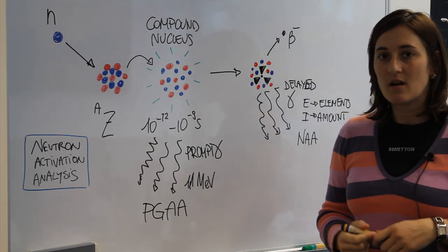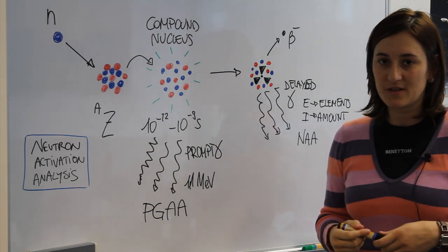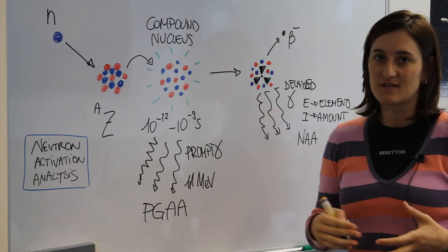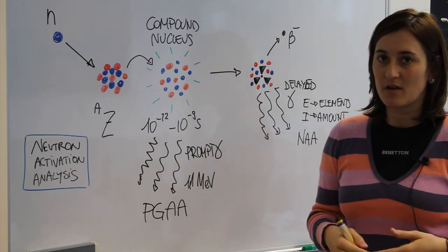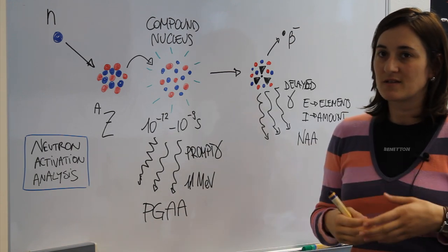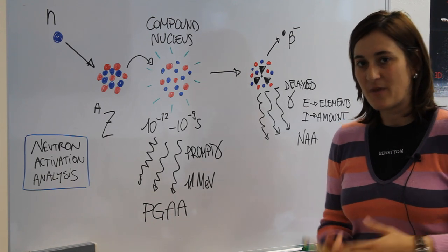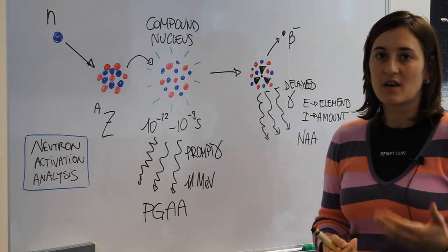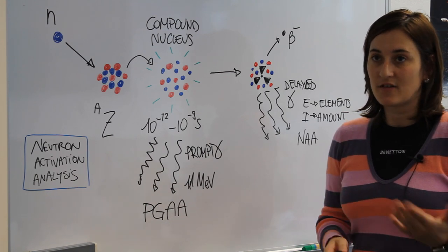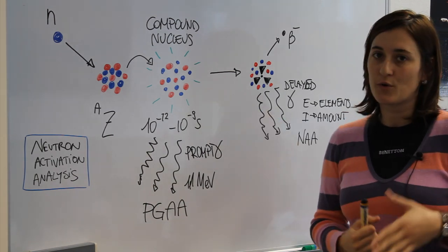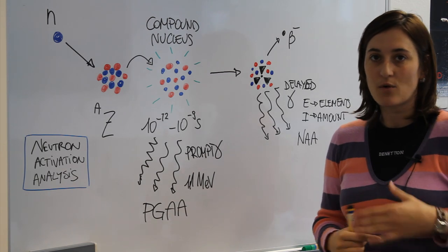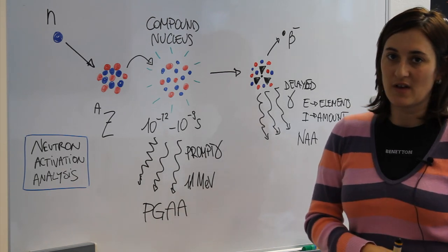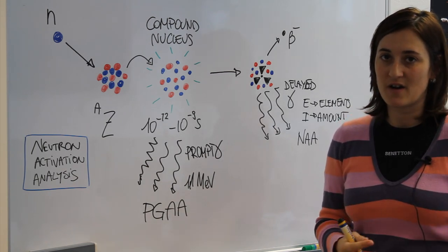With this method, the measurements are a little bit different because the gamma radiation is detected during the neutron irradiation, so this brings a lower sensitivity respect to NAA. But the advantage of this method is that you can detect the elements that are going after the compound nucleus goes to a stable nucleus or for those radioactive elements that don't emit a gamma cascade.